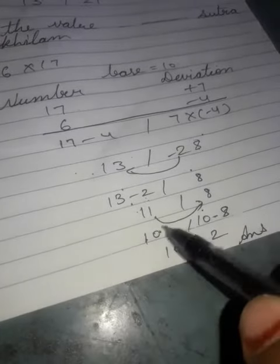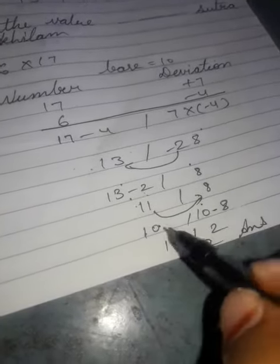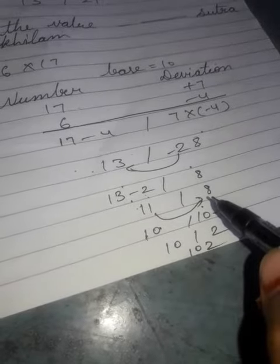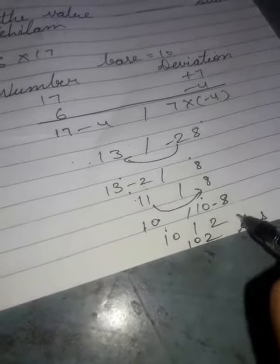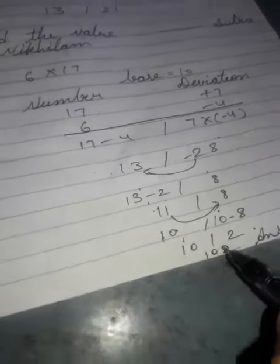Here we have 11 and base 10, so we subtract from here. 11 minus 1 gives 10, and 10 minus 8 gives 2. So our answer is 102.